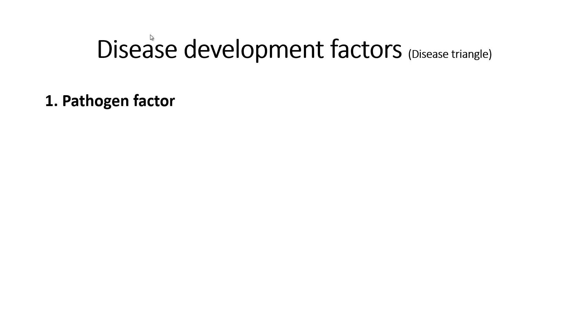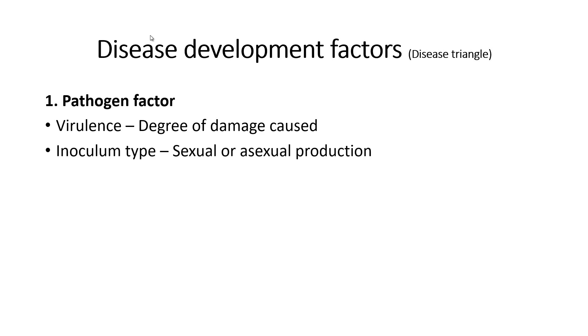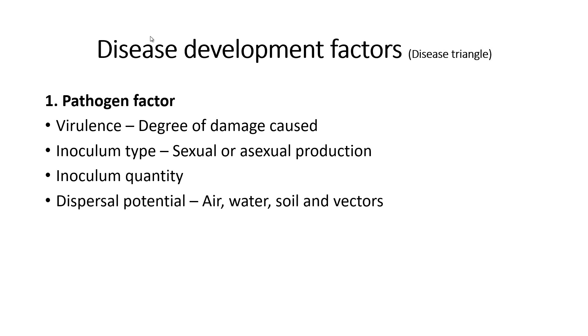Disease development factors — we will look at some examples of pathogen, host, and environmental factors that contribute to disease development. Pathogen factors: the degree of damage caused by a pathogen depends on the virulence of the pathogen, inoculum type (whether sexually or asexually produced), and inoculum quantity — the higher the quantity of inoculum, the higher the probability of disease infection. Pathogen propagules are transmitted through air, water, soil, and vectors. Air-borne propagules are probably the most important because they can be easily spread over larger distances, whereas soil-borne and seed-borne pathogens can cause severe diseases but remain localized.